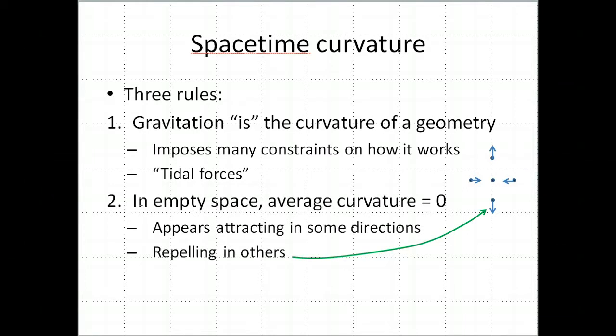Second rule is that in empty space, away from mass energy, it's not that the curvature is equal to zero. It's that the average curvature equals zero. Curvature can work in various directions. To measure curvature, it's not just a number. You have to say, in what directions am I looking at, and then I get whether the curvature is attracting or repelling in those directions.